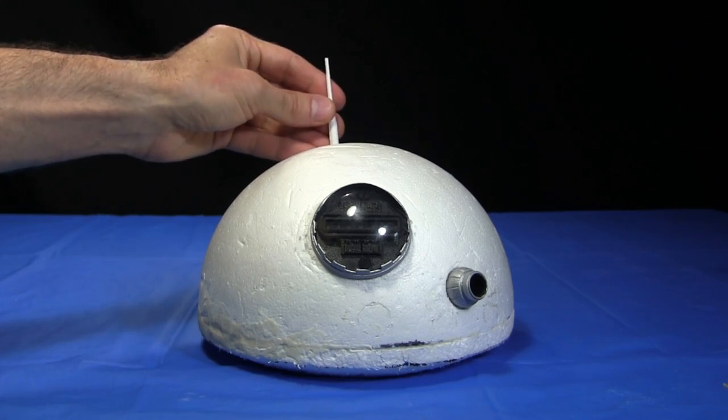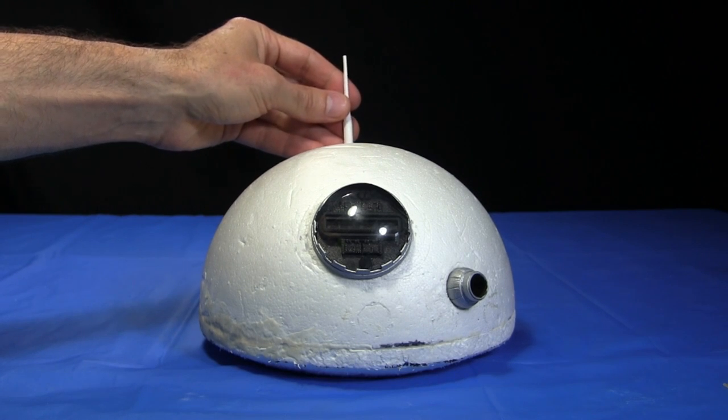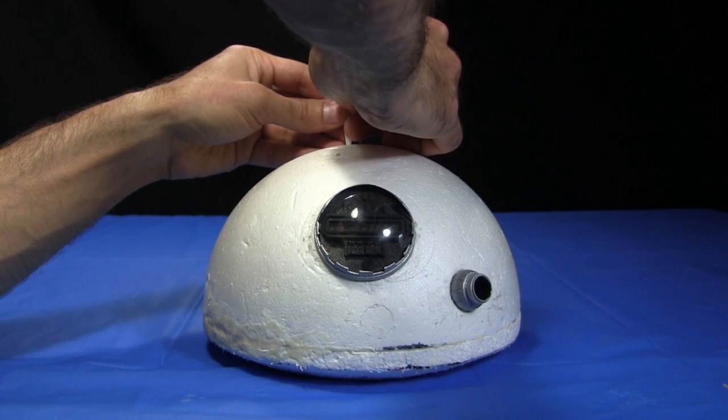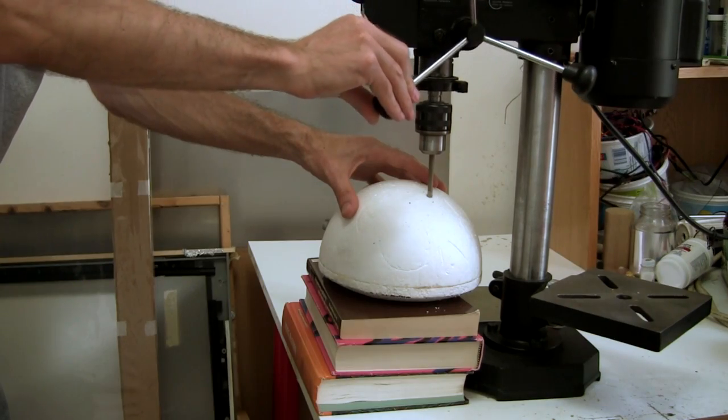Looking at the head straight on, I then guess where the antenna should go in the horizontal direction. Just a little to the left of the top of the radar eye. Finally I drill a hole straight down.